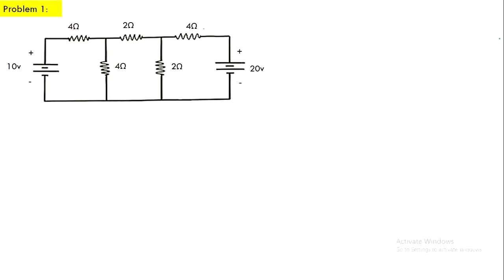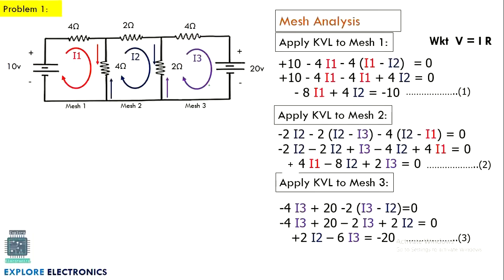By applying Kirchhoff Voltage Law to this circuit, let us find out that for three meshes we will be getting equation 1, equation 2, and equation 3. By solving these three simultaneous equations, we are going to get the currents I1, I2, and I3.